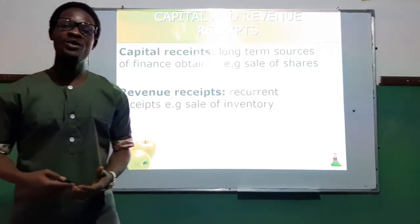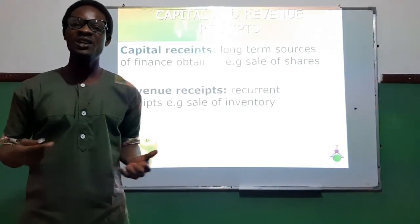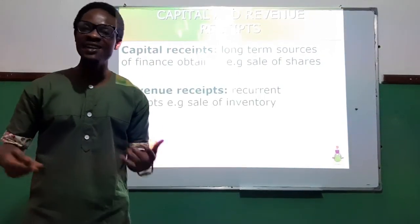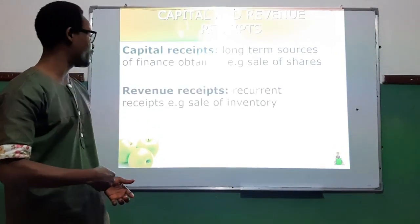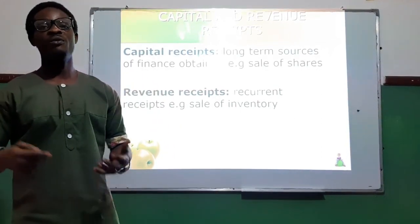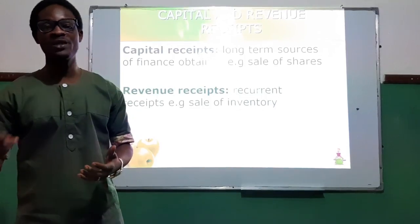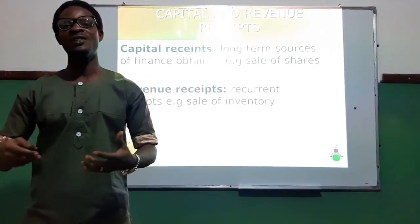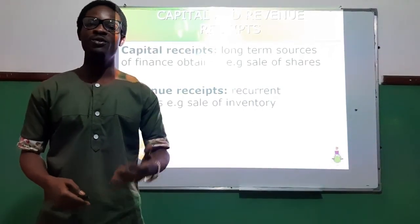Revenue receipts are recurrent or regular — daily, weekly, or monthly receipts — or what the business earns regularly. Examples include sale of inventory, fees obtained by a school, fees obtained by a hotel, or revenue obtained from sale of inventory by a trader. Any revenue that is obtained regularly is called a revenue receipt.